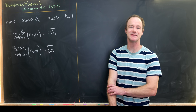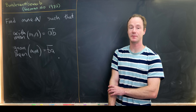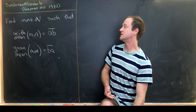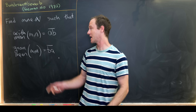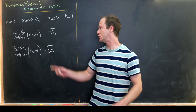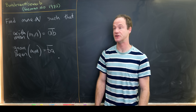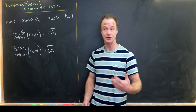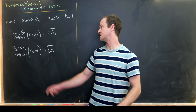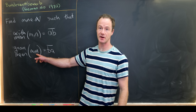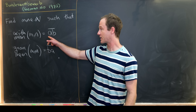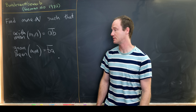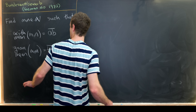Today I've got a nice problem from a 1972 German Math Olympiad. Our goal is to find all natural numbers m and n such that the arithmetic mean of m and n is a two-digit number ab, and the geometric mean of m and n is the two-digit number ba — the same digits switched. That's a cute little problem; let's see how the solution goes.